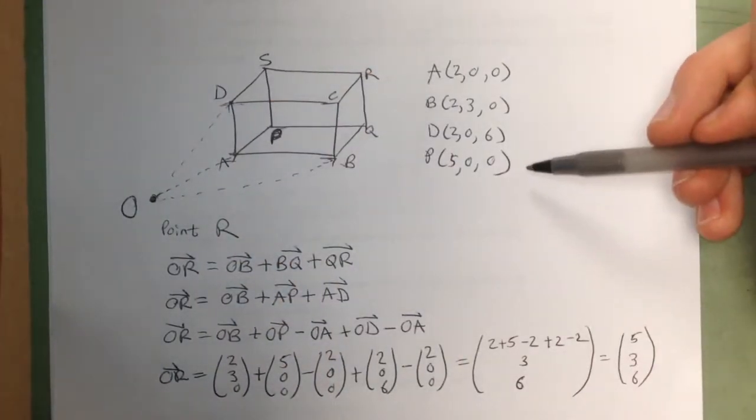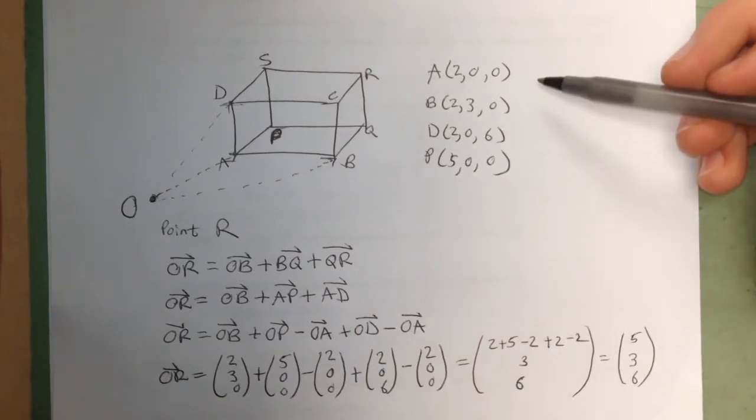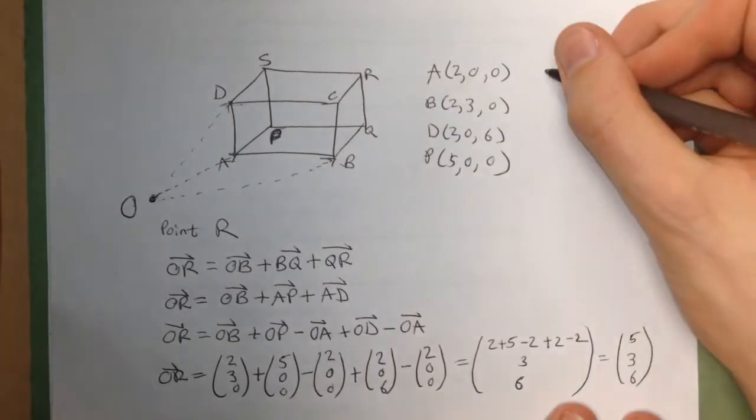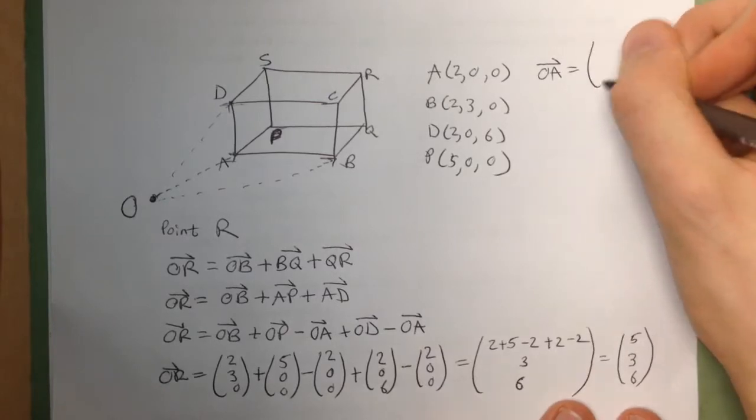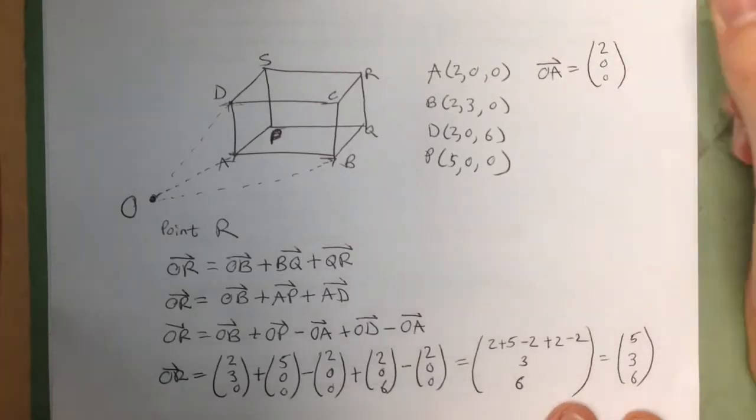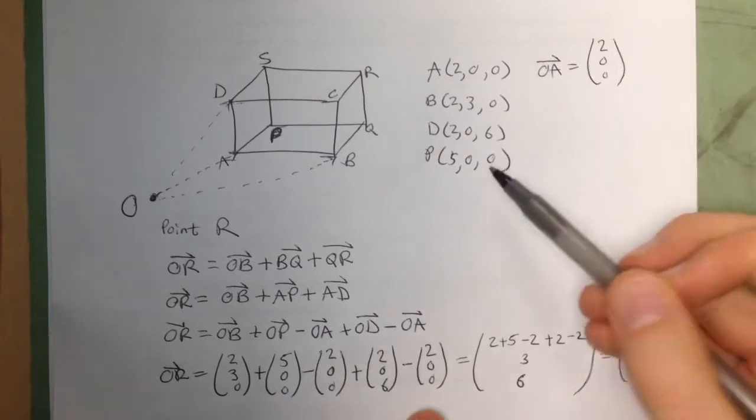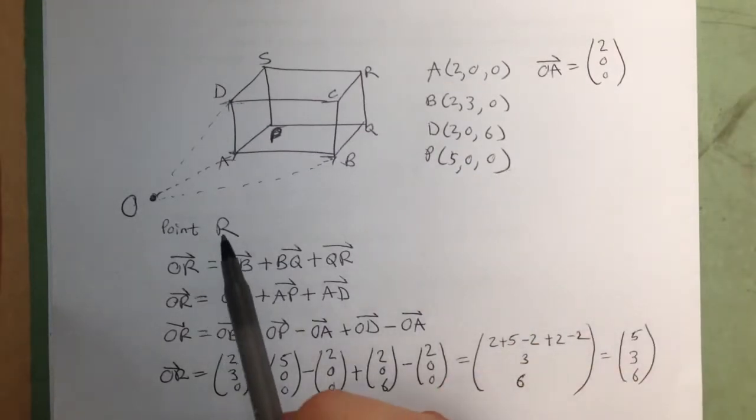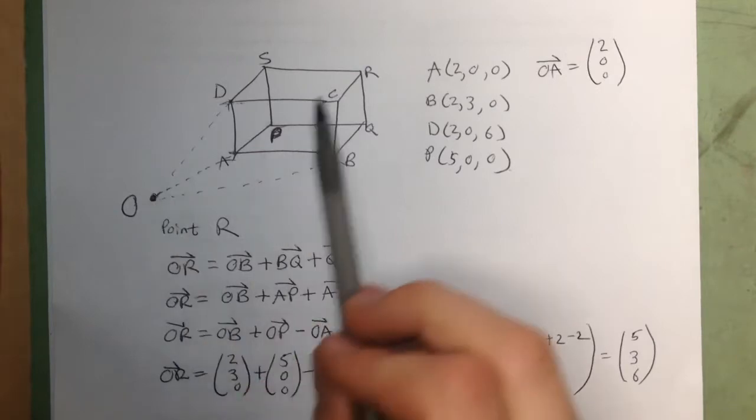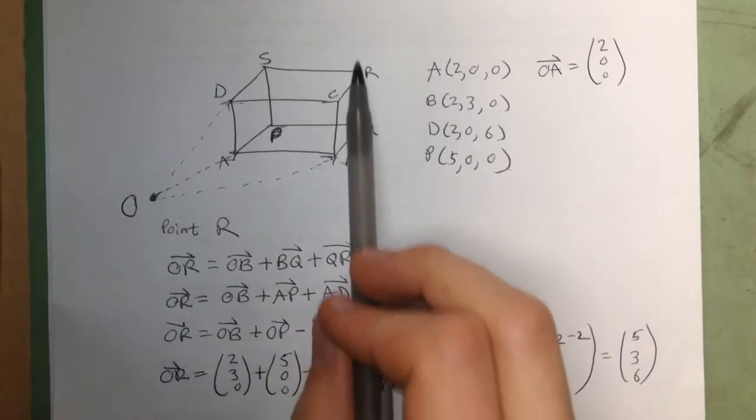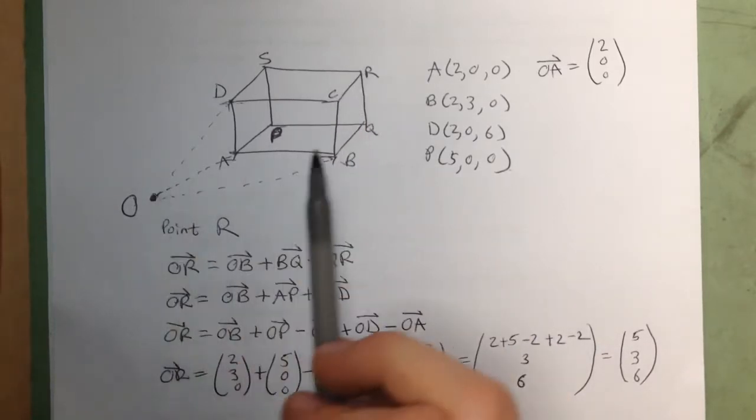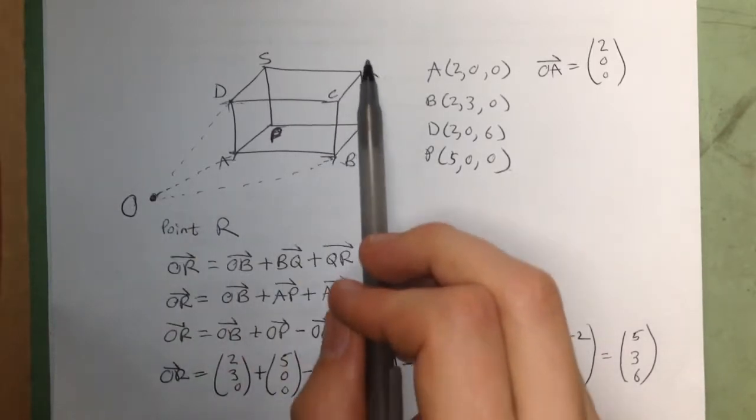So what I just did is I added the origin to my diagram and I imagined there being vectors pointing to each of the points in the cuboid. Basically, the coordinates that I was given I could translate into vectors. So like this point A, I could translate it into the vector OA, which would be 200. And so if I wanted to find another point, like point R, I could just imagine the vector OR and then I could think, how do I get from O to R? And I went through B and Q to get there. So I said that OR was equal to OB plus BQ plus QR.